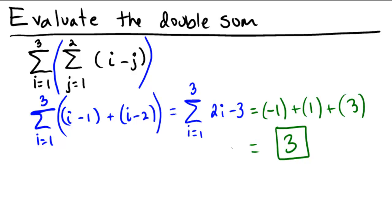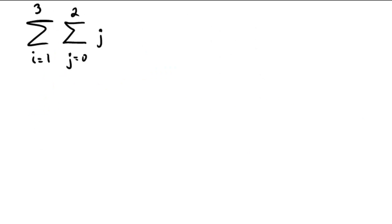So now why don't you pause the video and see if you can do this one on your own. The sum i equals 1 to 3 of the sum j equals 0 to 2 of just j. So there is no i floating around this time. So assuming you paused the video and gave this a good shot, let's see what we can do together.